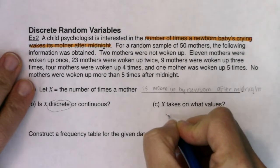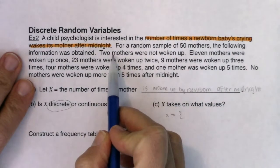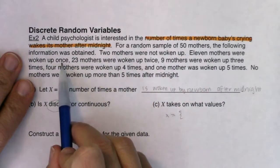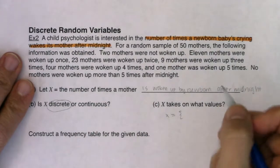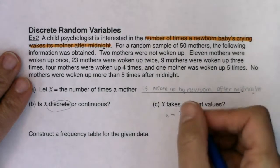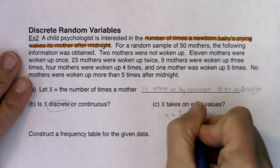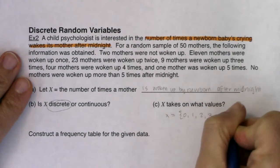X takes on what values? What's its sample space? Well, you can hear it here. Two mothers were not woken up. Some were woken up once, twice, three times, four times, and one poor mom was woken up five times after midnight. So I'm going to go ahead and write that out: zero, one, two, three, four, and five.